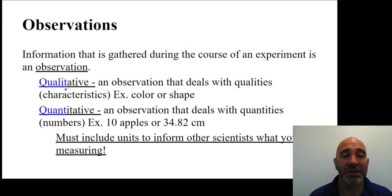Qualitative. And you'll see in blue, you can see the word quality. So qualitative is a type of observation that deals with qualities or characteristics. An example is colors or shapes.